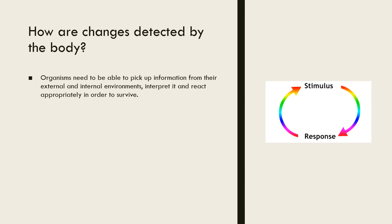Homeostasis is the regulation of these conditions in the body in order to maintain a stable internal environment. The purpose of homeostasis is to maintain a constant internal environment that supports enzyme activity and allows cells to carry out all life processes. In order to be able to maintain a steady state, organisms need to be able to detect changes in their internal and external environments.